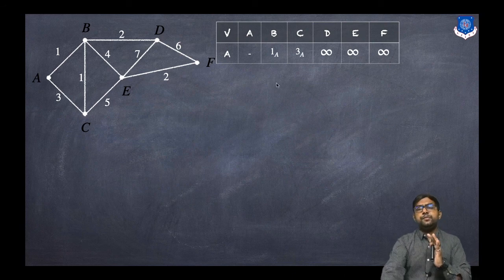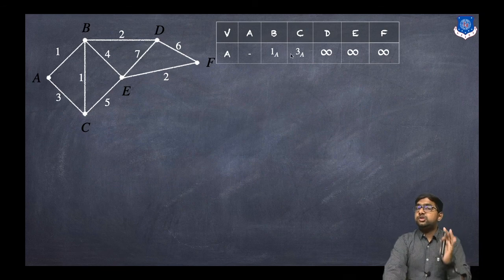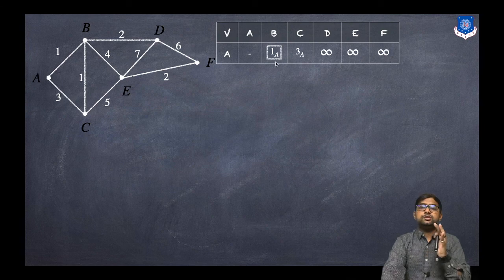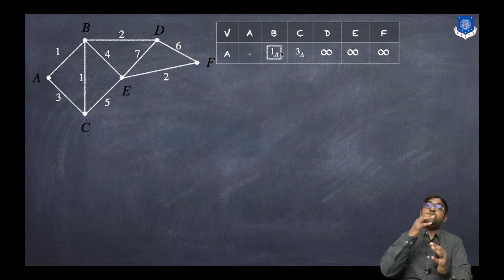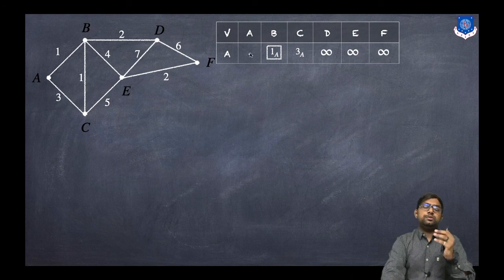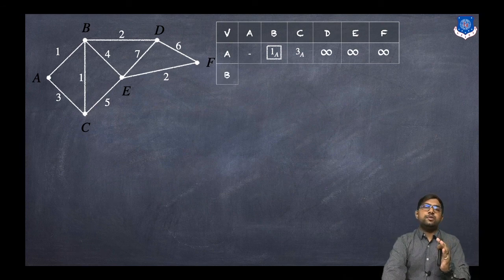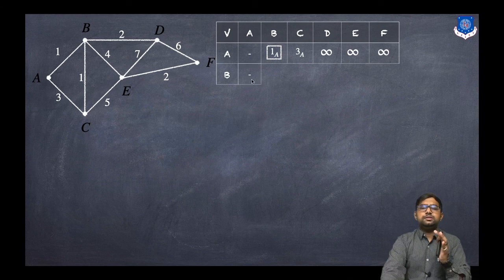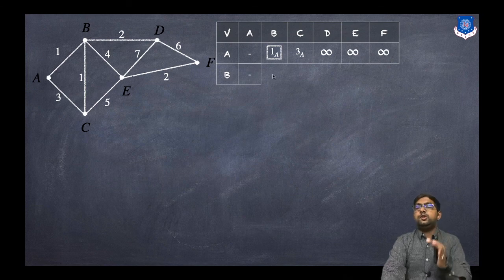So the first row is done. Now, looking at this row, what is the minimum distance? That is 1A, and corresponding to that the vertex is B. So in the next row, B will be the visited vertex. A to A is already done, and B to B is also done — so that is a dash.